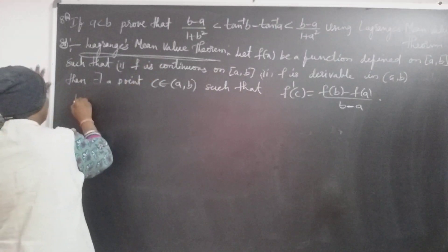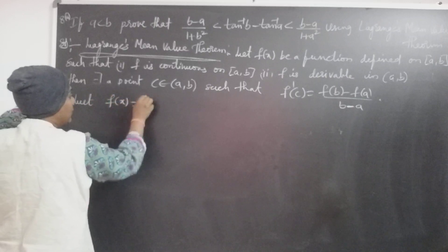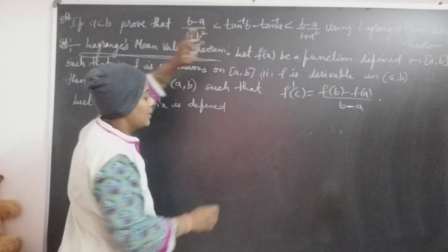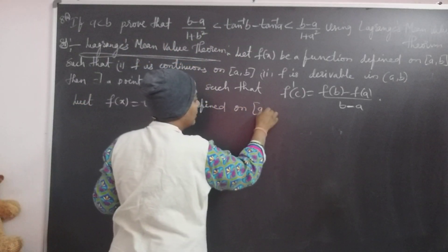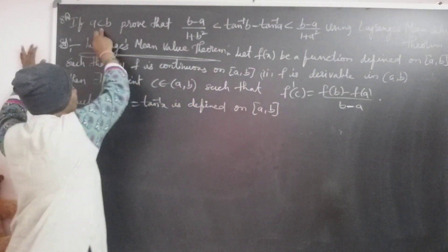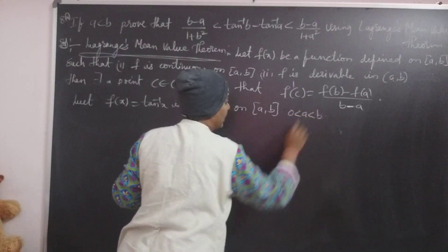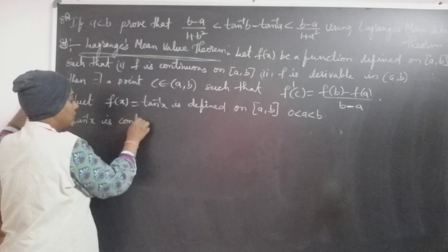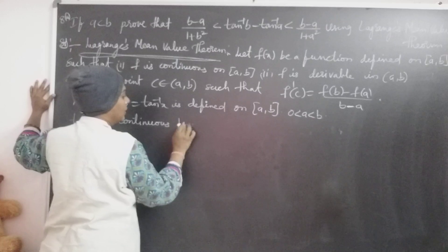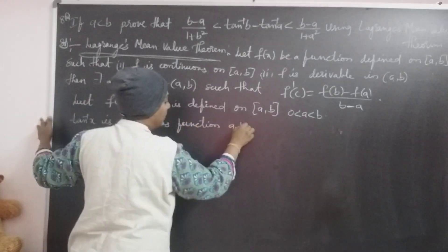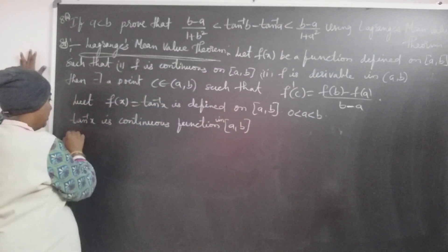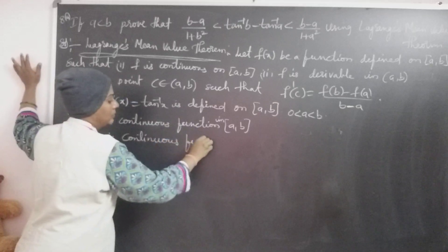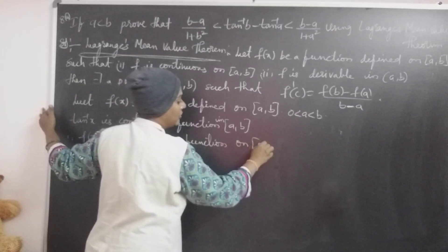By observing the relation, f(x) equals tan inverse x is defined on the interval [A, B] only. We know that A is less than B, so A and B are in increasing order. We know that tan inverse x is a continuous function — continuous function in the real values on the closed interval [A, B]. Therefore, f(x) is a continuous function on the closed interval [A, B].